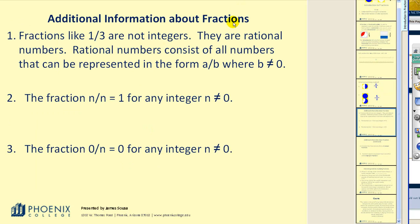Here's some additional information about fractions that we should be aware of. Fractions like one third are not integers. They are rational numbers. Rational numbers consist of all the numbers that can be represented in the form of A over B, where B does not equal zero. So, if you can write it as a fraction, where the denominator is not equal to zero, it would be considered a rational number.